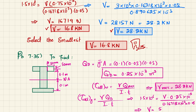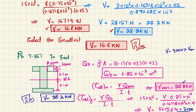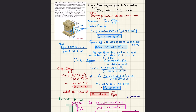Solving gives V = 50,156 N ≈ 50 kN. Since 50 kN is greater than V_max = 28.2 kN from the wood constraint, we select V = 28.2 kN as the governing answer. This is the maximum shear that can be developed in the beam for Problem 7-35. That covers both problems 7-34 and 7-35.